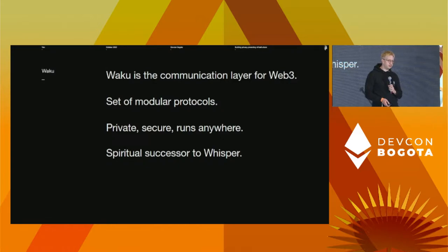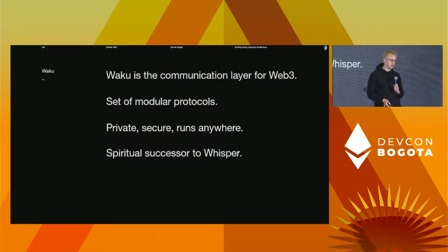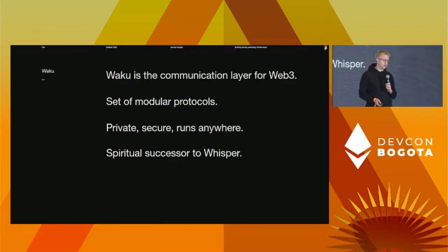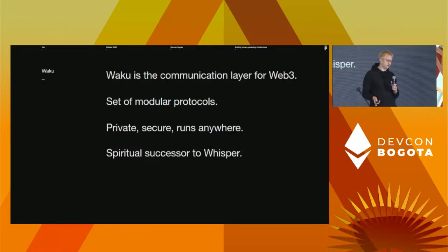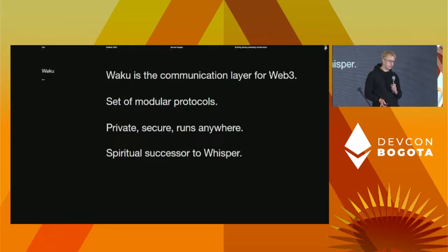So what is Waku? It's a set of modular protocols for P2P communication, with a focus on privacy, security, and being able to run anywhere. It's a spiritual successor to Whisper. By modular, we mean you can pick and choose protocols depending on your constraints and trade-offs — for example, bandwidth usage versus privacy. It's designed to work in resource-restricted environments such as mobile phones and web browsers. Just like you don't need your own army and a castle to have a private bathroom, you shouldn't need a powerful always-on node to get reasonable privacy and censorship resistance. We might call this self-sovereignty.